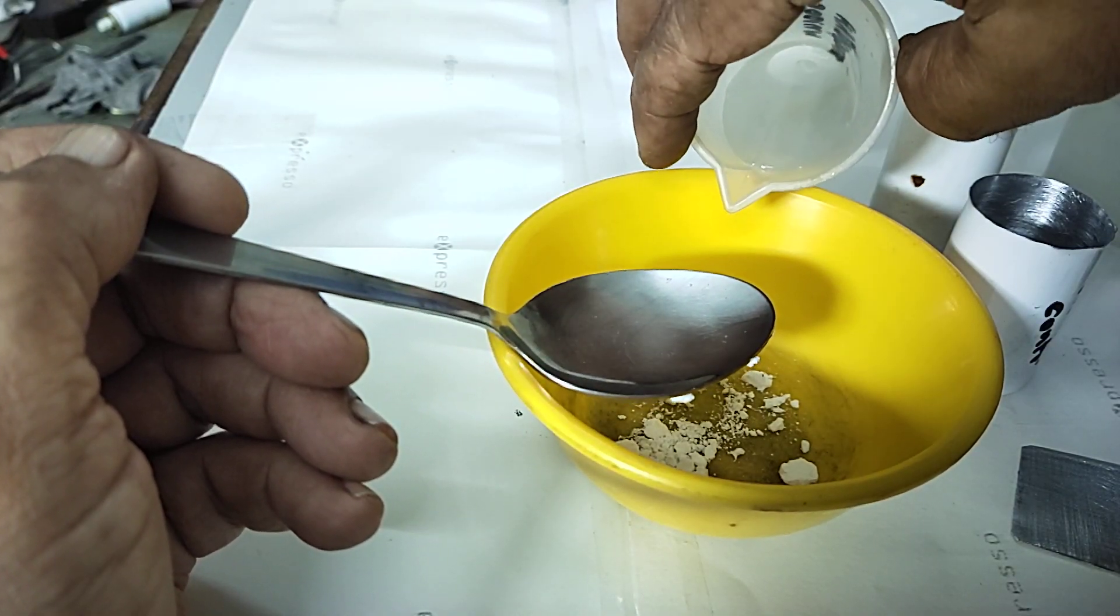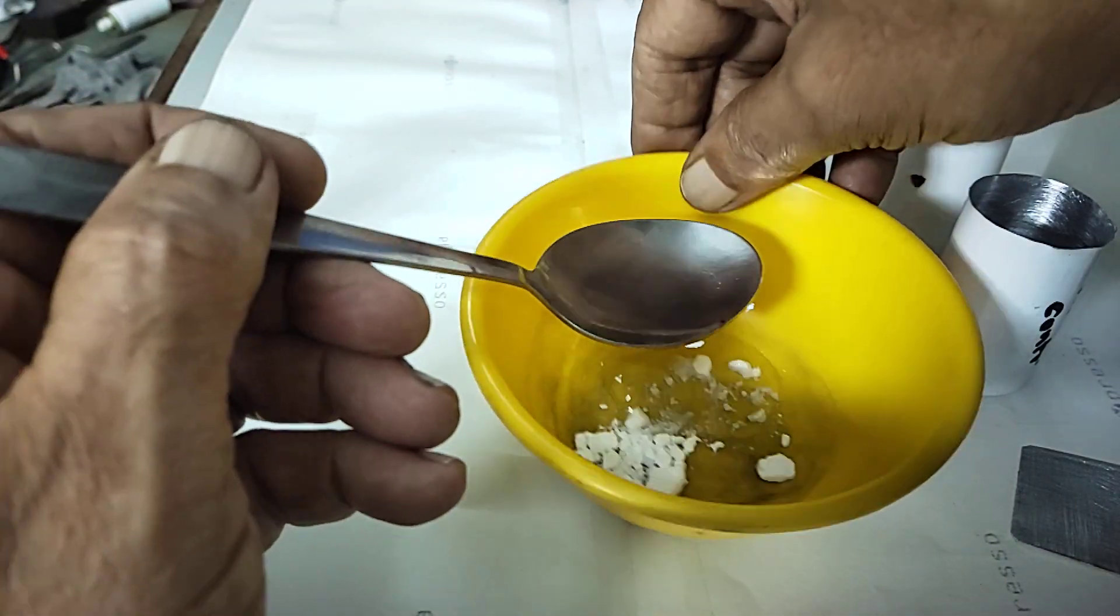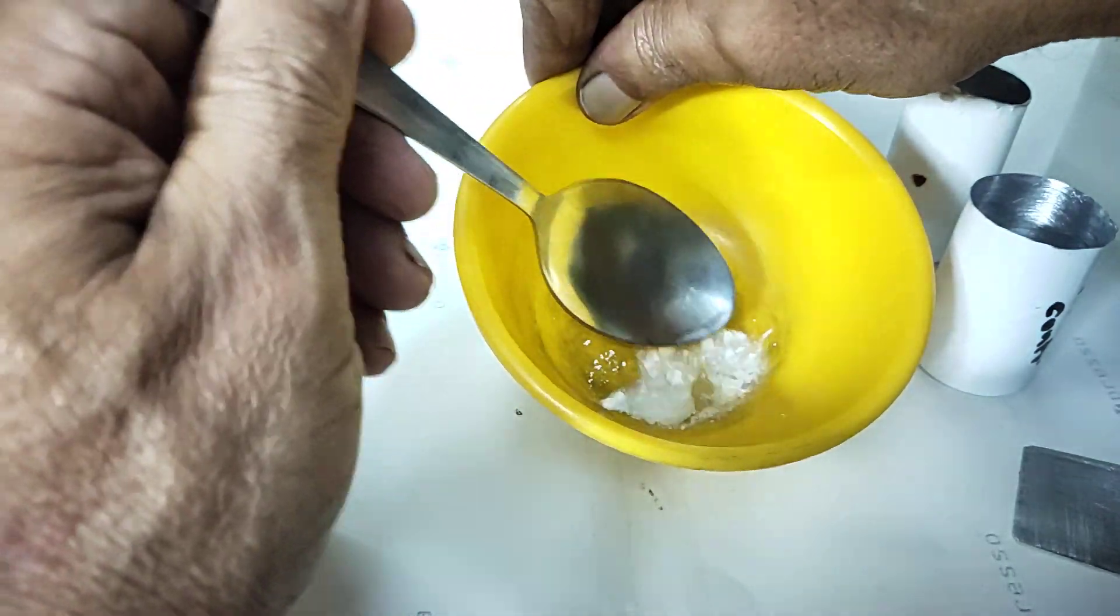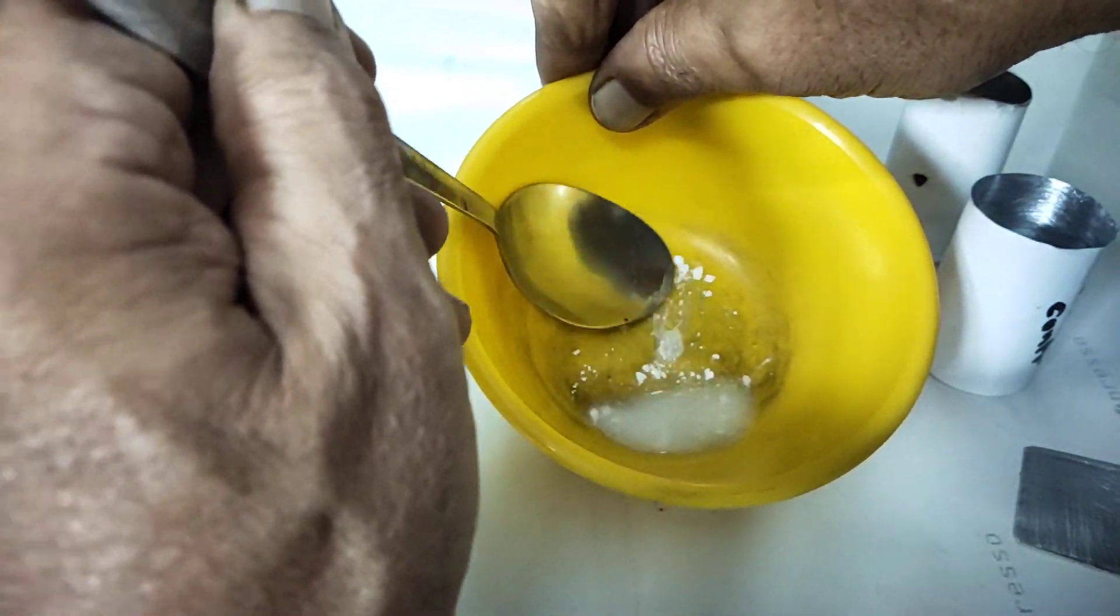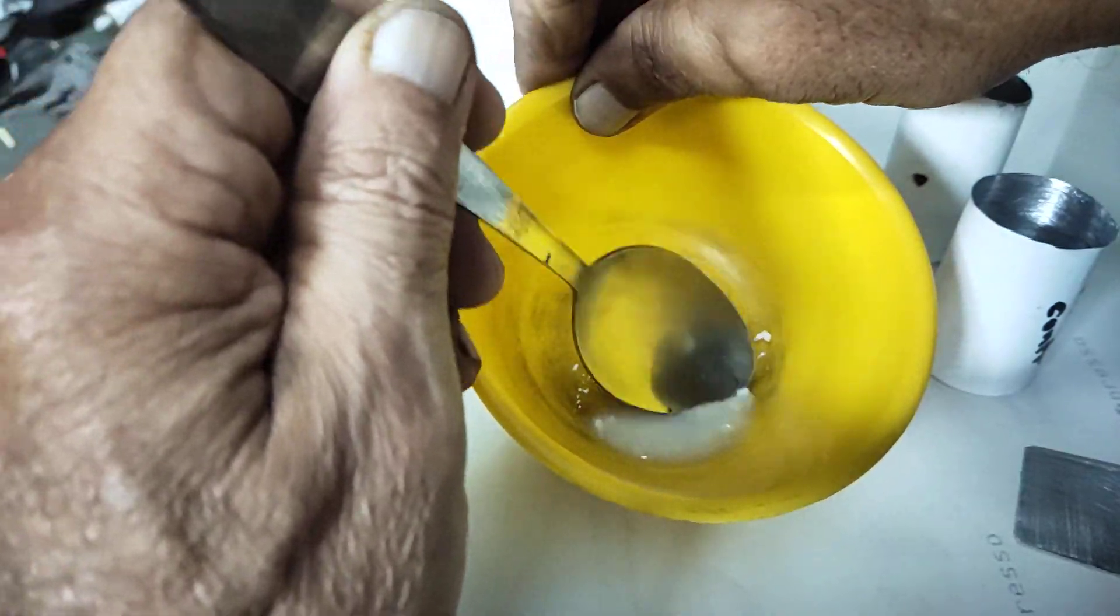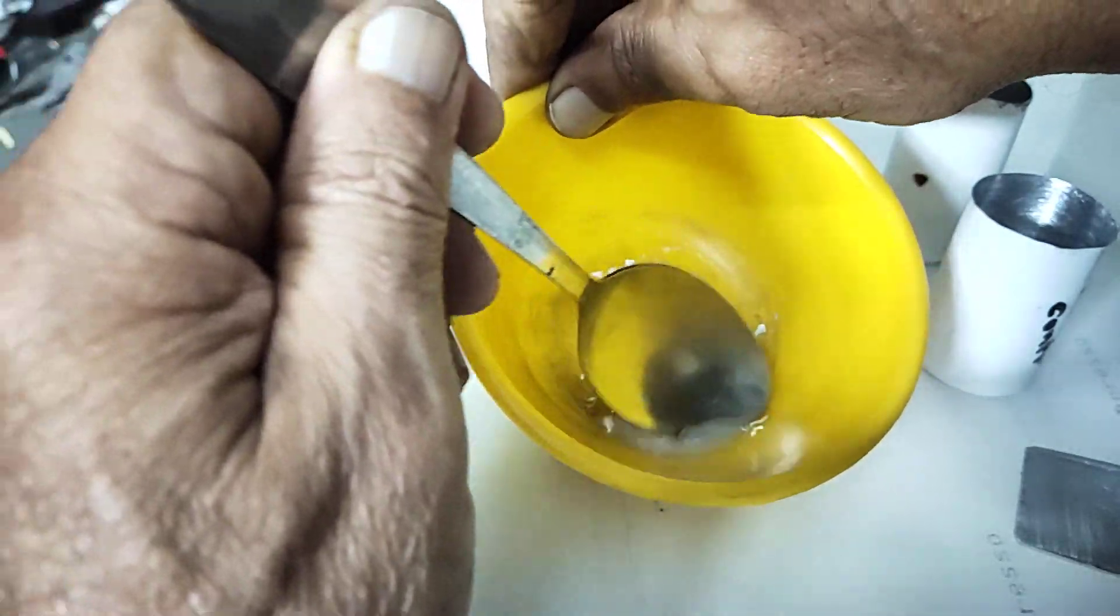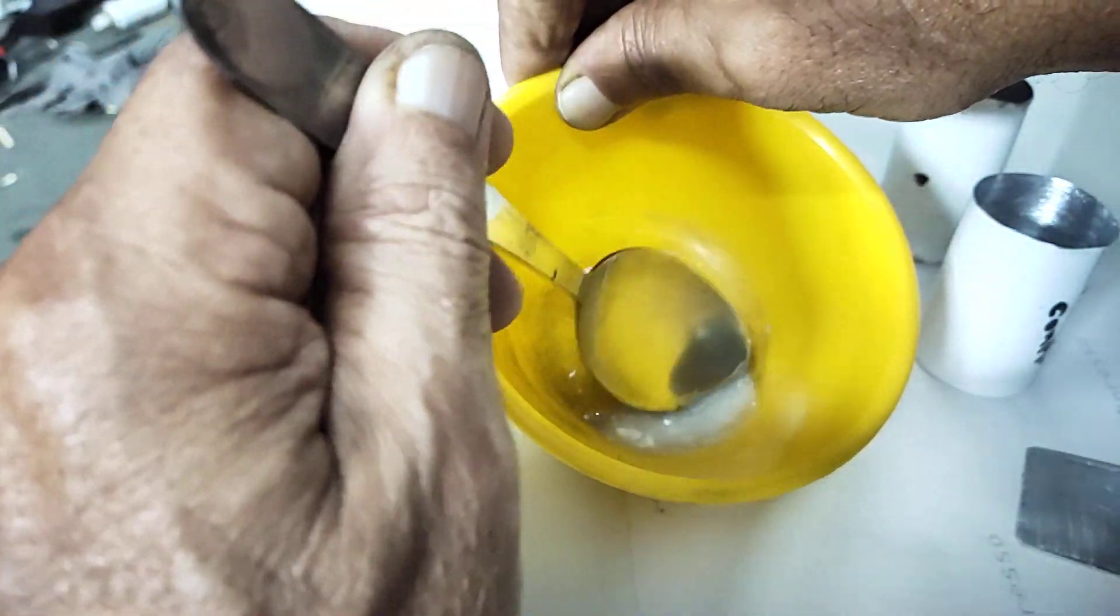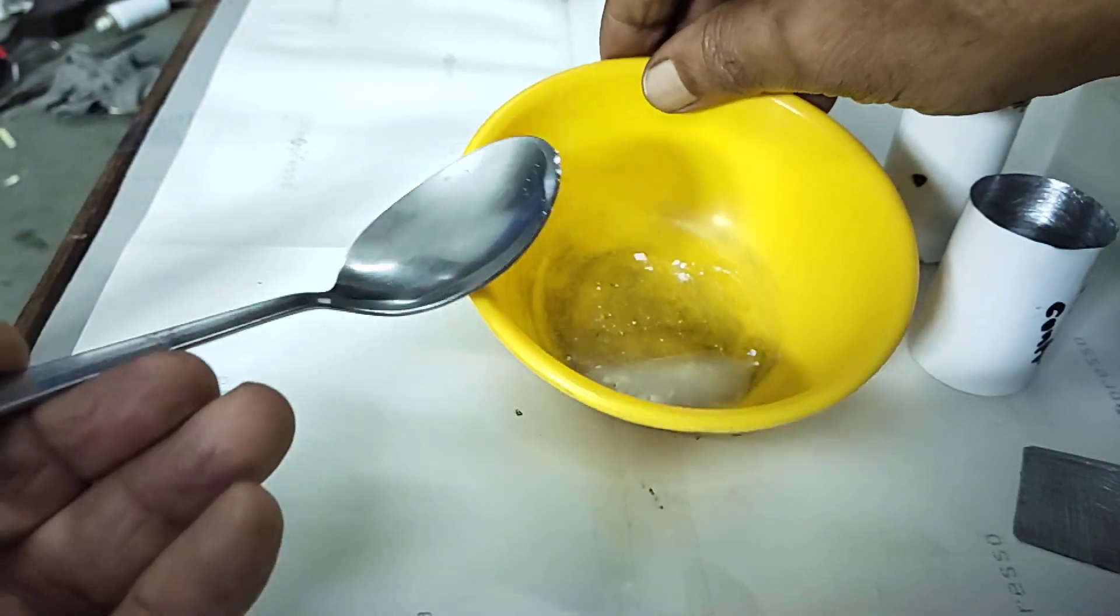We have to stir it. Actually we are not supposed to take any metal spatulas - always plastic is better because this may sometimes react also. These are all chemical reactions. We will slowly use it for coating.